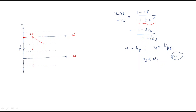At ω₁ = 1/τ, a zero is added, so the −20 dB slope returns to 0 dB. For phase: up to ω₂, the phase is 0°. At ω₂, a pole is added and phase goes toward −90°. At ω₁, a zero is added giving +90°, so the phase recovers — it follows a characteristic lag shape between the two corner frequencies.